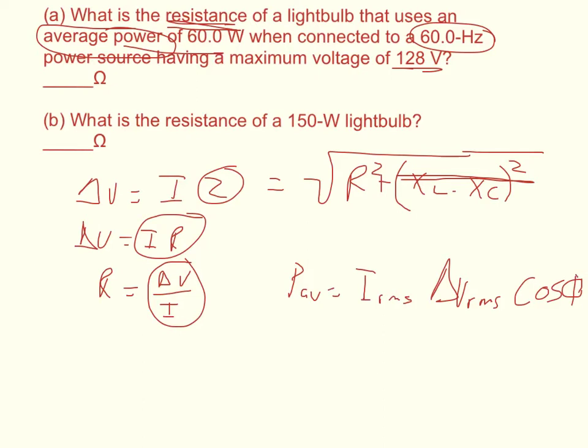Since we're given P average, we want to use rms current and rms voltage. We're going to solve for the current. We got P average divided by delta V rms cosine of phi equals I rms, the root mean squared current.